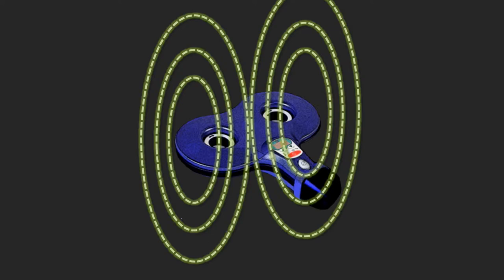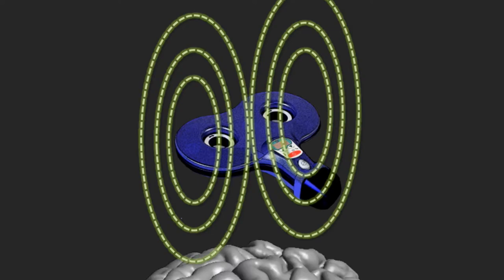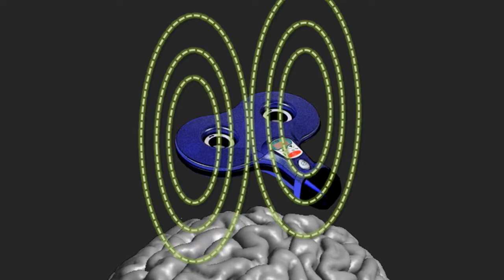So that means, you place the coil on top of the head, and you run an electric current through that coil, then a magnetic pulse will be induced that goes through the skull into the brain.